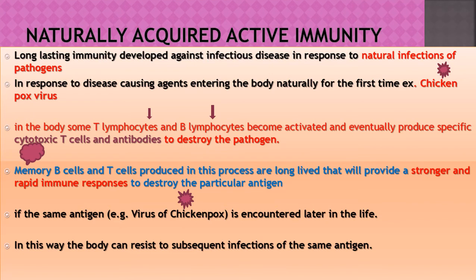Naturally acquired active immunity is a long-lasting immunity developed against infectious disease in response to natural infection by pathogens. For example, the chicken pox virus entering the body for the first time activates T lymphocytes and B lymphocytes, which produce specific cytotoxic T cells and antibodies to destroy the pathogen. At the same time, memory B cells and T cells are also produced.